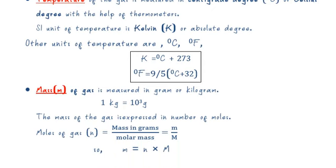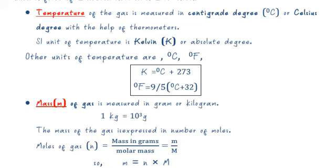Temperature is measured in Celsius using a thermometer; the SI unit is Kelvin. K = °C + 273, and °F = (9/5)°C + 32. Mass of a gas is measured in grams or kilograms; 1 kg = 1000 g. The mass of a gas is expressed in number of moles: n = mass in grams ÷ molar mass (M). Therefore, mass in grams = n × M.